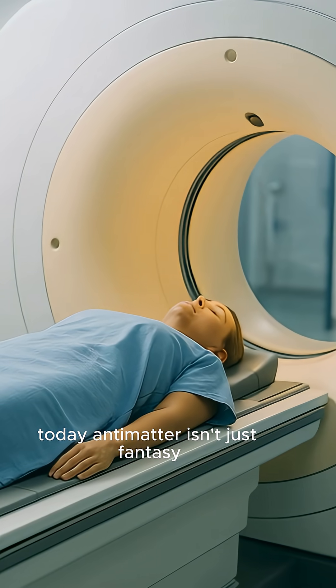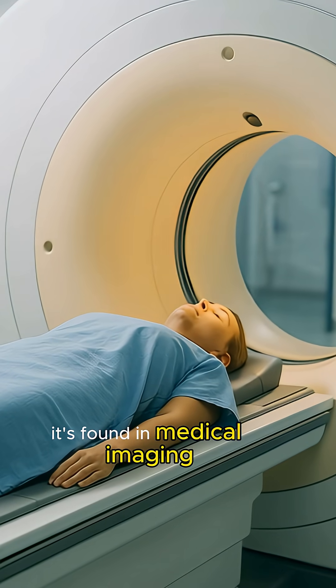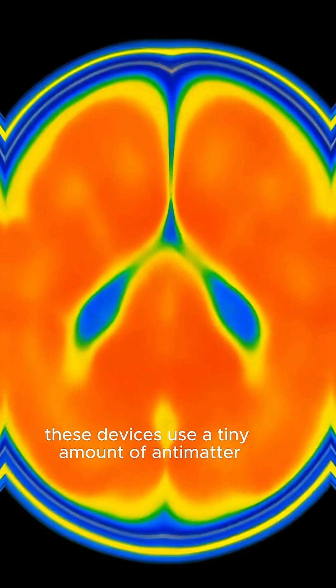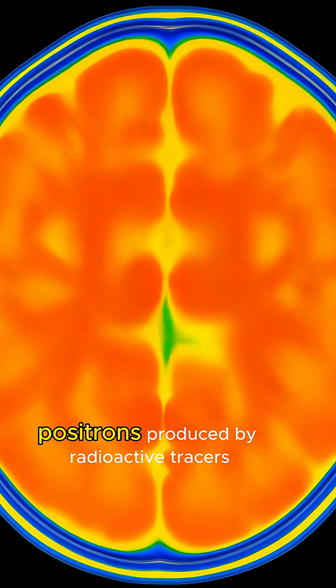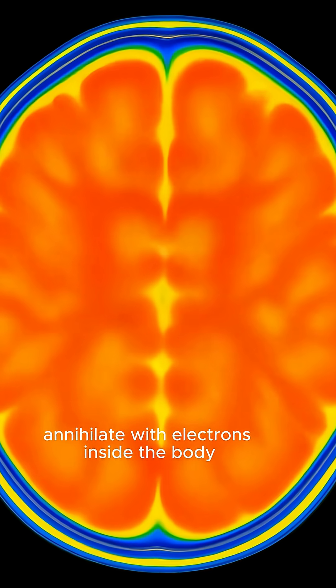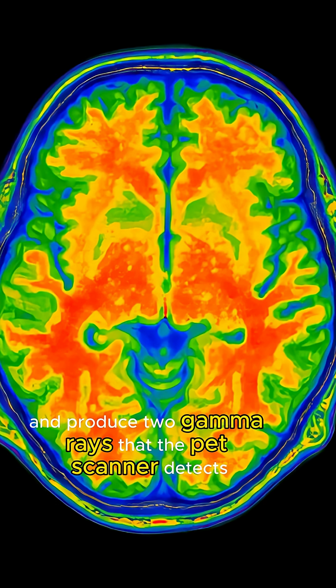Today, antimatter isn't just fantasy. It's found in medical imaging. These devices use a tiny amount of antimatter. Positrons, produced by radioactive tracers, annihilate with electrons inside the body and produce two gamma rays that the PET scanner detects.